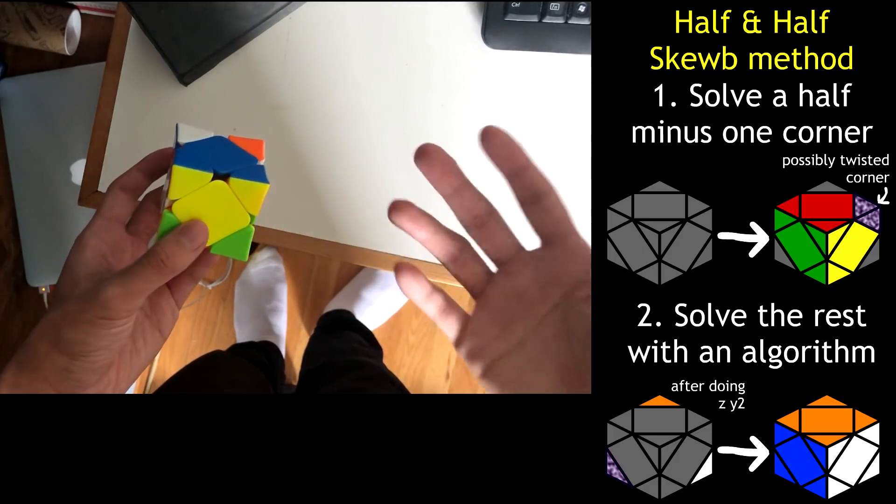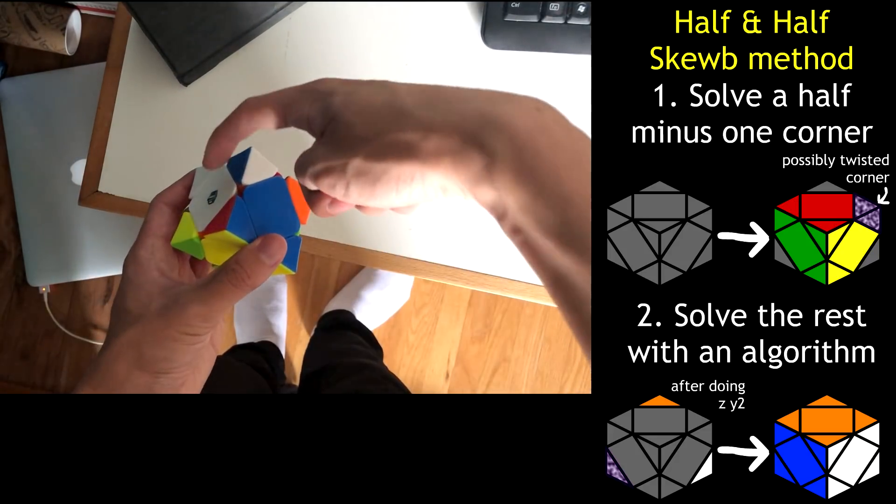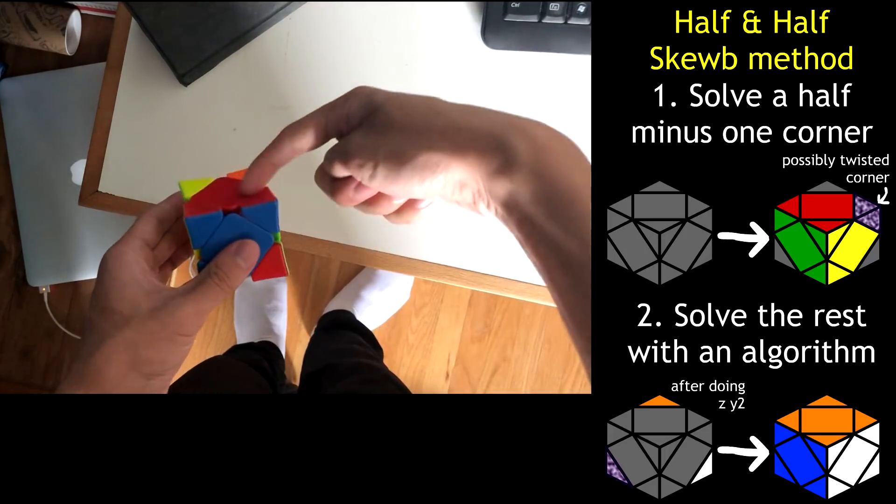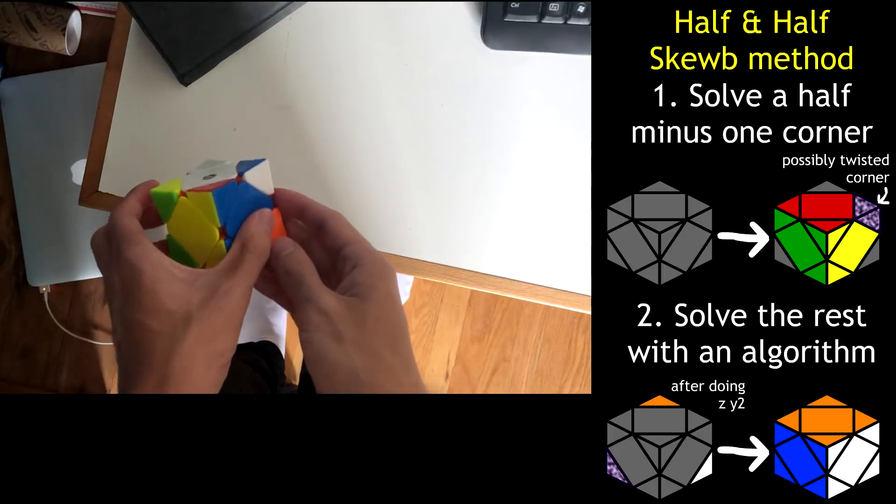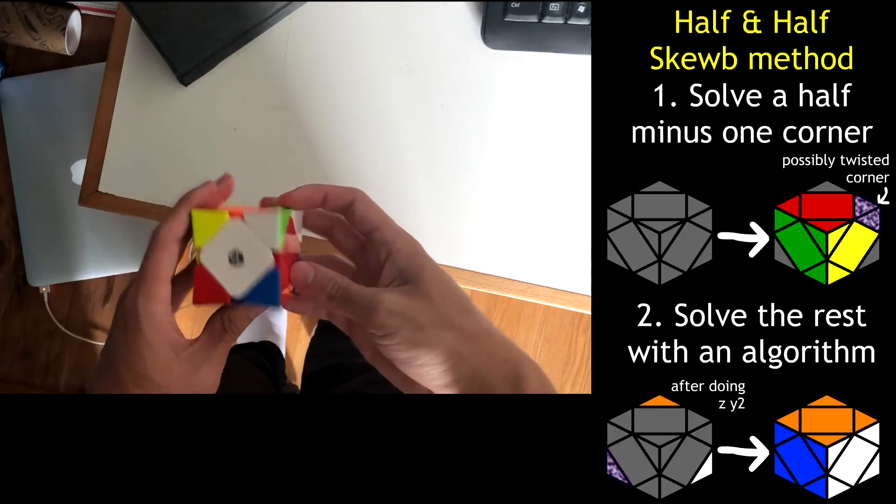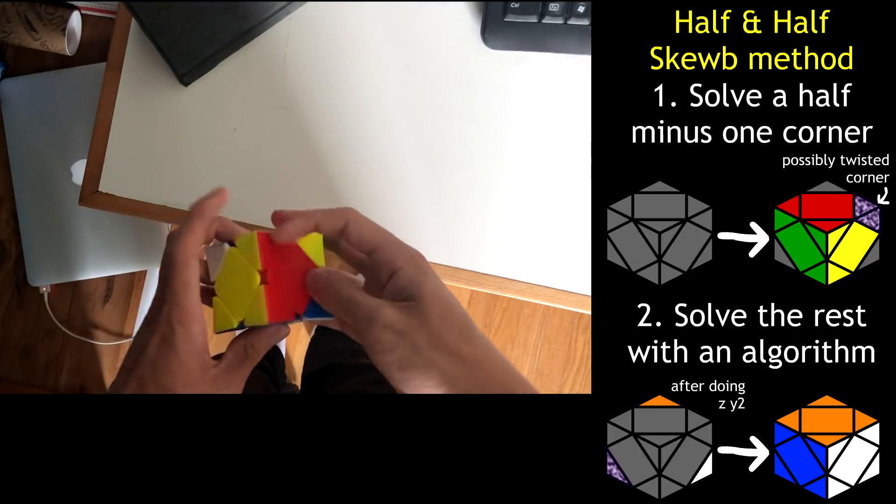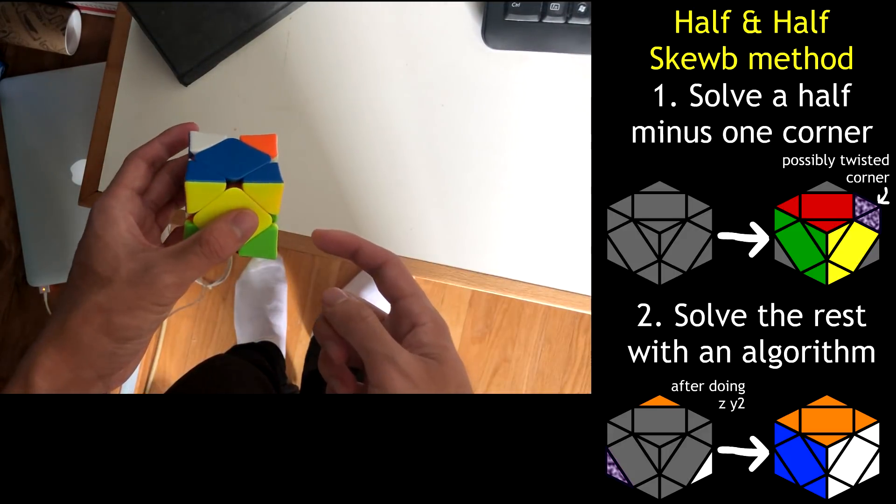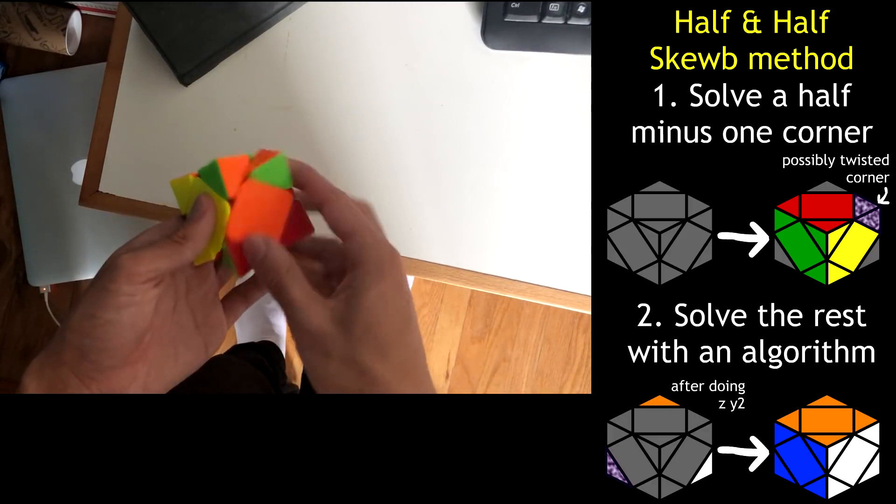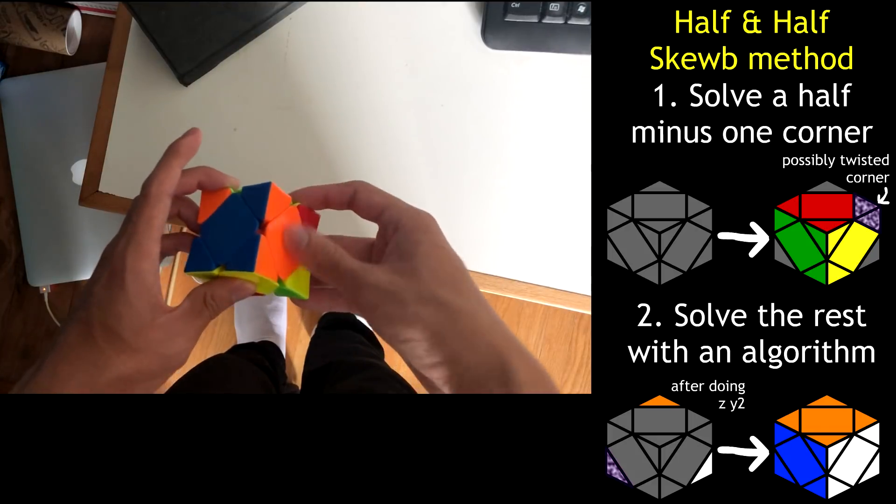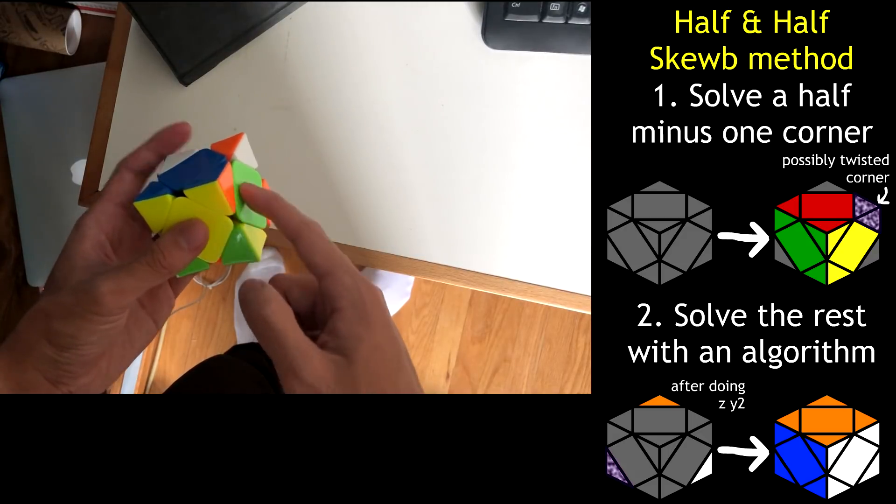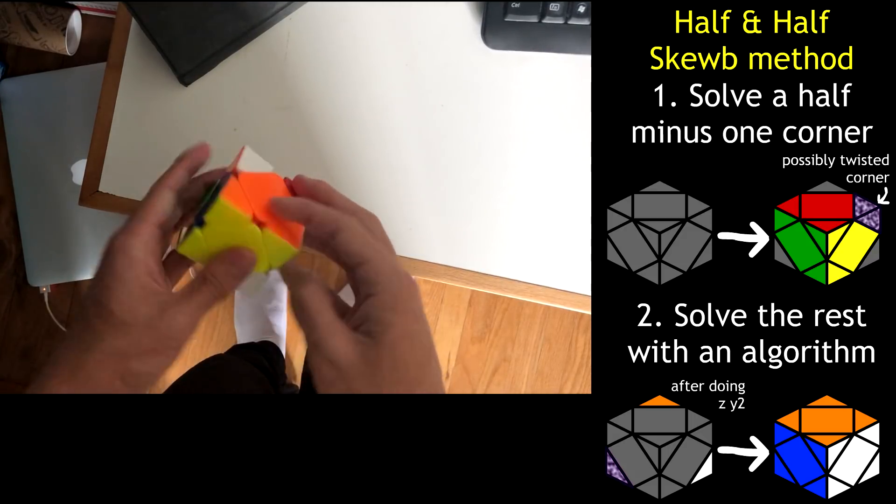In this case, what are those four choices? Well, we could solve the red-blue pair in the back-left, like that. We could do the red-yellow pair in the front-left, like that. We could also do the orange-blue pair in the back-right, like this. Or we could do the orange-yellow pair in the front-right, like that.